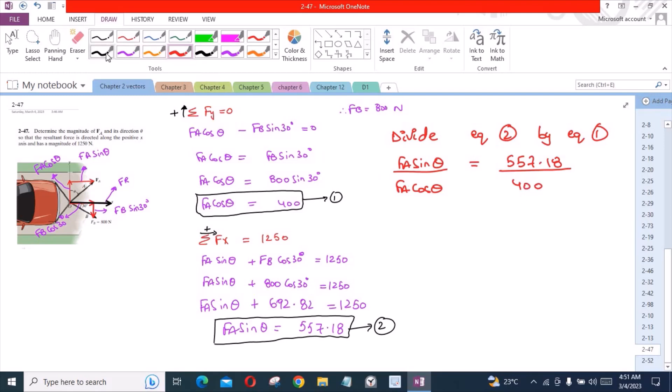So from here we have tan theta equals 1.393 and theta equals 54.32 degrees. This is our first answer.